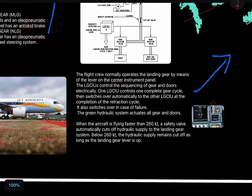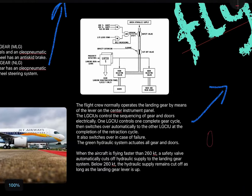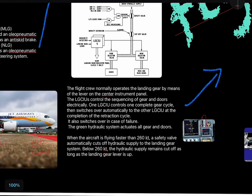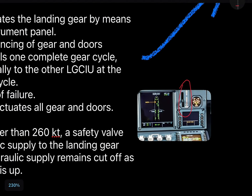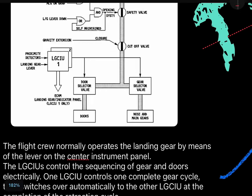When the aircraft is flying faster than 260 knots, a safety valve automatically cuts off the hydraulic supply to the landing gear system. Below 260 knots, the hydraulic supply remains cut off as long as the landing gear lever is in the up position. Once you put the landing gear down, the safety valve opens and resumes the supply of the green hydraulic system.